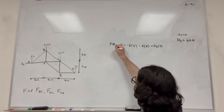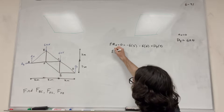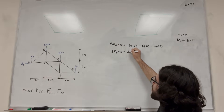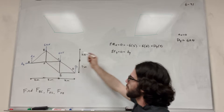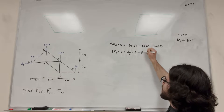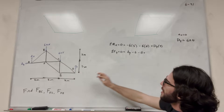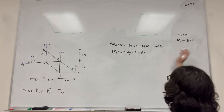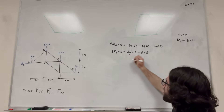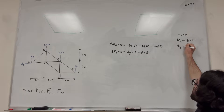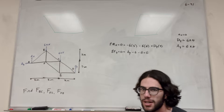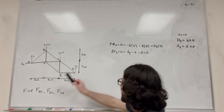Then all we have to do to find A of Y is sum of the forces in the Y direction equal to zero. We have A of Y minus the six kilonewton load minus the next six kilonewton load plus D of Y, which is six. Minus six plus six cancels, and you find that A of Y is also equal to six kilonewtons. So we got the easy part out of the way.